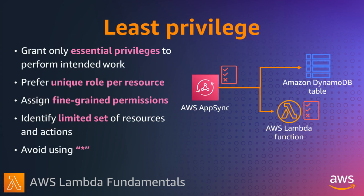Always use the principle of least privilege when creating IAM policies and roles. Start with the most restrictive set of permissions and only grant further permissions as required for the function to run. Use unique roles per resource with fine-grained permissions to specific resources. The principle of least privilege ensures security in depth and eliminates the need to remember to go back and fix it once the function is in production.